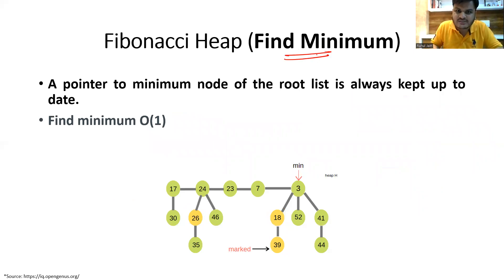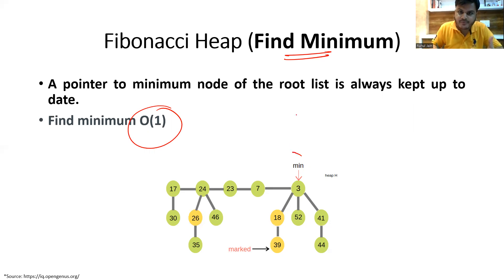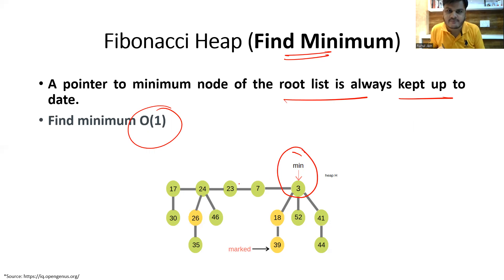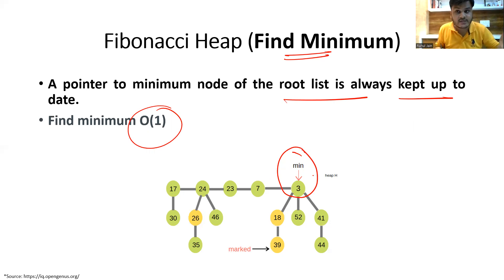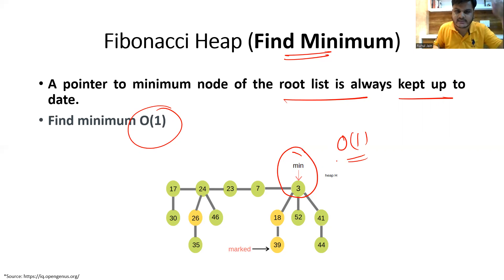The first operation is finding minimum. Finding the minimum node in the Fibonacci heap takes order 1 because the root list is always kept up to date. There is a minimum pointer which updates itself by comparing nodes and tracking the minimum — here the minimum node is 3. So finding the minimum takes O(1) because by default it is already pointing to that node.